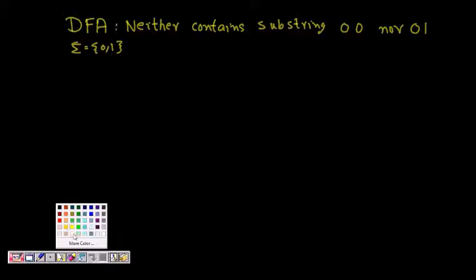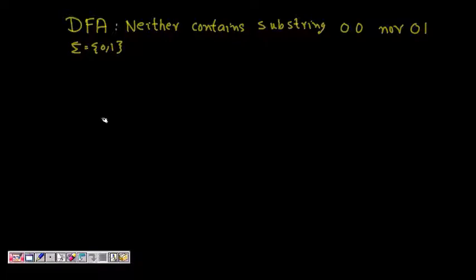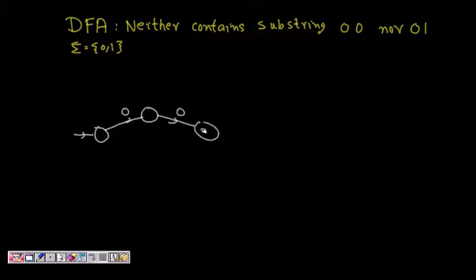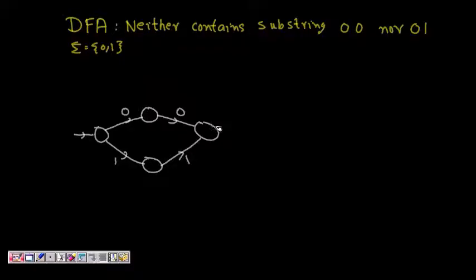Let's try to solve this. I should not have 00, so if you have a start state and you get 00, you go to a dead state. Similarly, if you get a 11 sequence — you get a 1 and you're waiting for another 1 — then you are in a dead state, so that string will not be accepted.